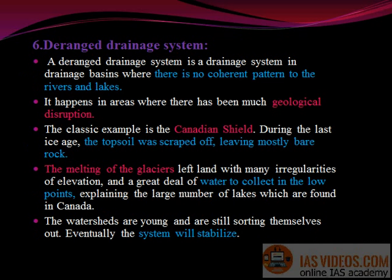Deranged drainage system: A deranged drainage system is a drainage system in drainage basins where there is no coherent pattern to the rivers and lakes. It happens in areas where there has been much geological disruption. The classic example is the Canadian Shield. During the last ice age, the topsoil was scraped off, leaving mostly bare rock. The melting of the glaciers left land with many irregularities of elevation and a great deal of water to collect in the low points, explaining the large number of lakes found in Canada. The watersheds are young and are still sorting themselves out; eventually the system will stabilize.